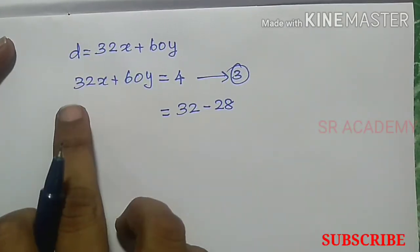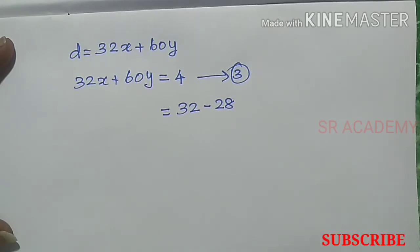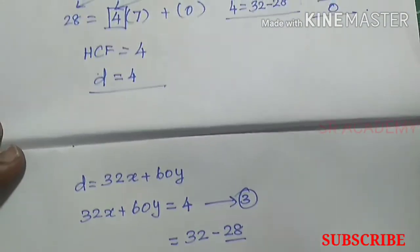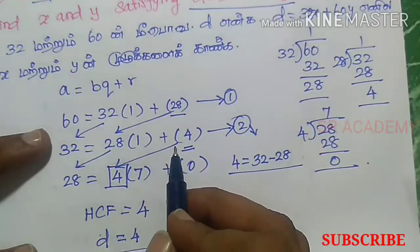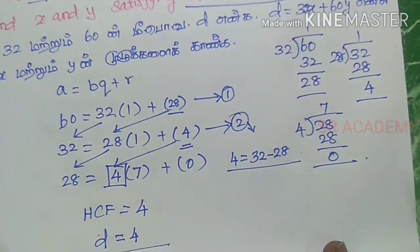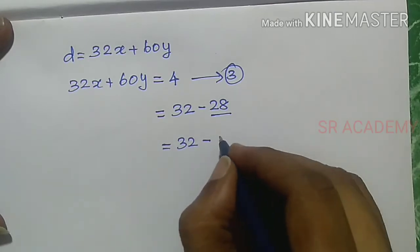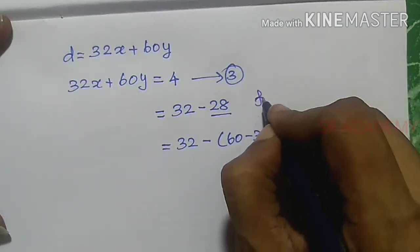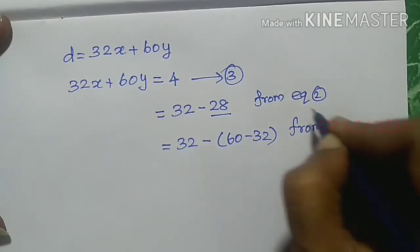In equation 5, we have 4 equals 32 minus 28. From equation 1, 28 equals 60 minus 32. So we substitute this into equation 5.